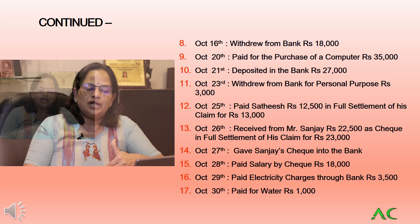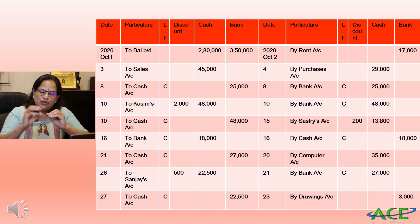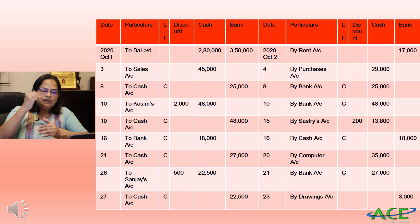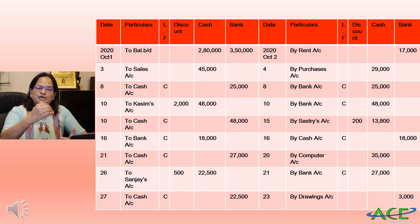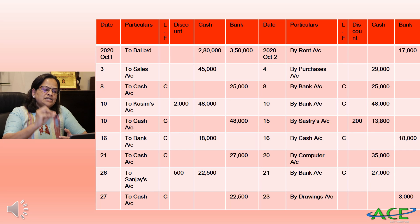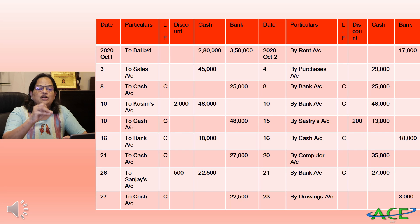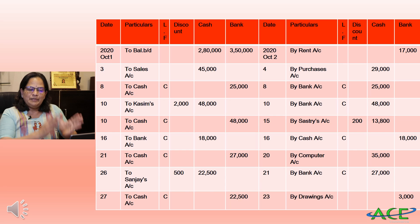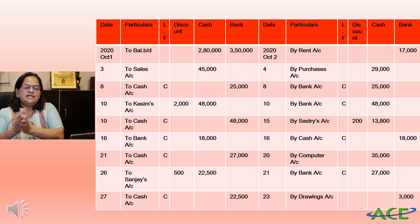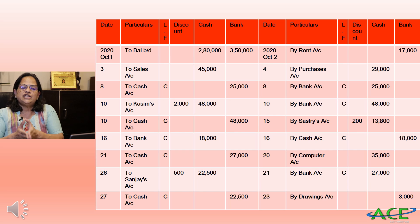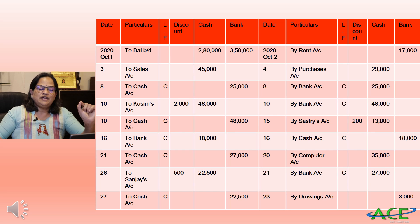October 28th: paid salary by check rupees 18,000. October 29th: paid electricity charges through bank rupees 3,500. October 30th: paid for water rupees 1,000 cash. Now we are doing the three column cash book — remember there are many columns: date, particulars, ledger folio, discount, cash, and bank. In the ledger folio column, capital 'C' must be written for contra entries. These columns repeat on both debit and credit sides.